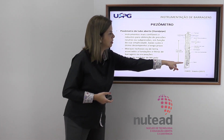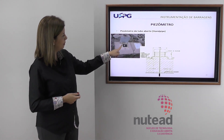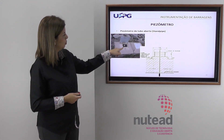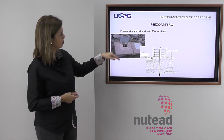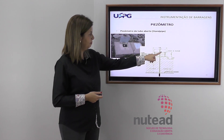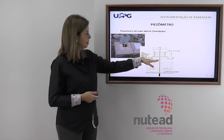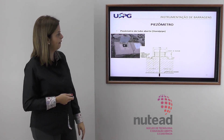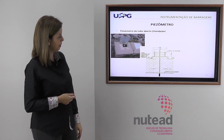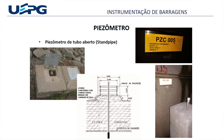Aqui a gente consegue ver um piezômetro instalado numa barragem, com o tubo por onde depois vai ser feita a leitura e uma proteção. Durante a construção, o aterro está subindo, o piezômetro já está lá, com uma grade de proteção para que os rolos compactadores não o danifiquem, havendo uma compactação mais controlada. Aqui também um piezômetro instalado numa galeria de drenagem, com o tubo indo até a fundação da barragem.